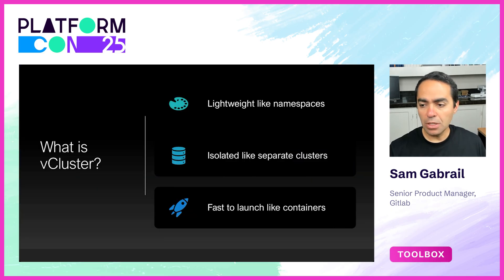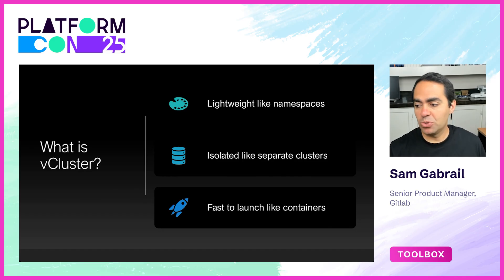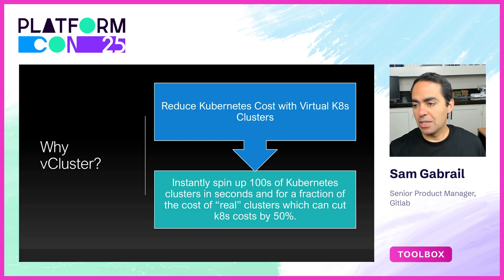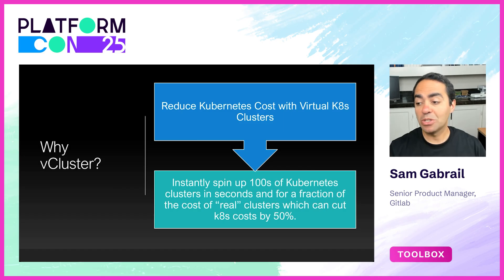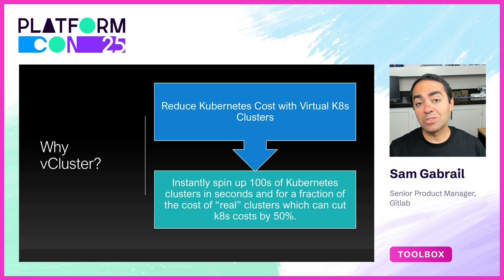vCluster is lightweight, similar to namespaces but with more isolation — like separate clusters — and it is very fast to launch, like containers. It reduces your Kubernetes costs by using virtual Kubernetes clusters instead of spinning up host clusters every time. It can instantly spin up hundreds of Kubernetes clusters in seconds for a fraction of the cost of a real cluster, cutting your Kubernetes costs by up to 50%. It takes about half an hour to spin up an EKS cluster in AWS, but with virtual clusters you can spin them up very quickly.